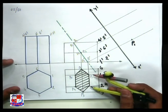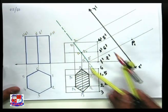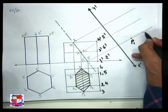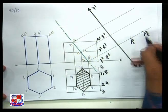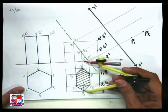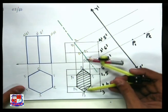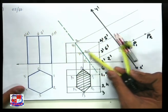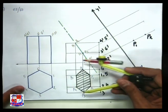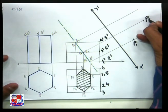Similarly, for point P2: find the distance of P2 from the XY line, measure this distance, draw an arc, and locate point P2. For point P3: measure the distance from P3 to the XY line, draw the line from P3, and locate that point such that both distances are equal. So here is point P3.